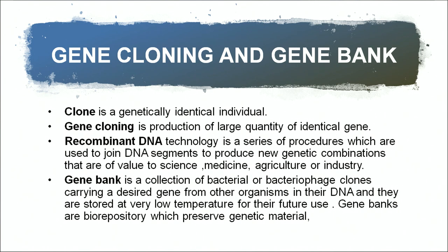Recombinant DNA technology is a series of procedures used to join DNA segments to produce new genetic combinations of value to science, medicine, agriculture, and industry. For example, the human insulin gene has been inserted into bacteria, and human insulin is now easily available in the market for diabetic patients. A gene bank is a collection of bacteria or bacteriophage clones carrying a desired gene from other organisms stored at very low temperatures for future use. Gene banks are bio-repositories that preserve genetic material.